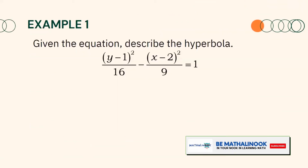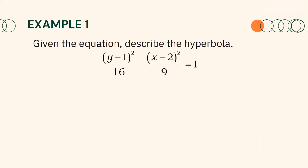Let us have an example. Given the equation (y − 1)²/16 − (x − 2)²/9 = 1, describe the hyperbola. Since the given equation is already in standard form, we can easily determine the center, a², and b². Remember that the center is at h, k. So here, h is 2 and k is 1. Therefore, the center of our hyperbola is at (2, 1).